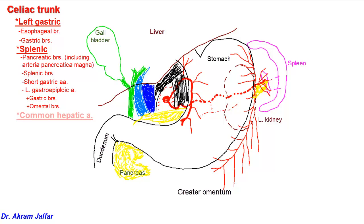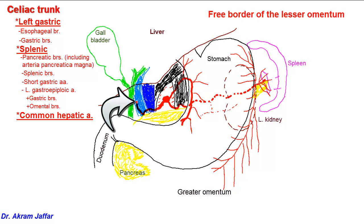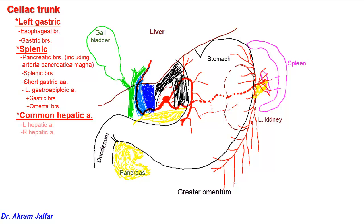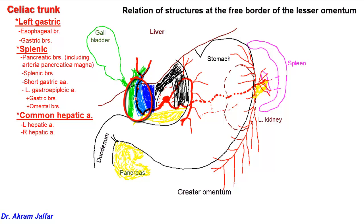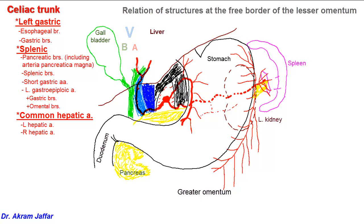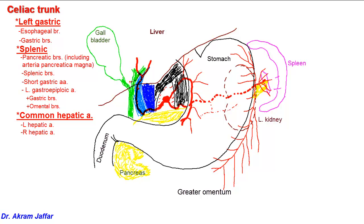The third branch from the celiac trunk is the common hepatic artery. The common hepatic artery passes toward the right along the upper border of the pancreas, and then passes a little anteriorly to gain access to the lesser omentum and will ascend up toward the liver, toward the porta hepatis, along the free border of the lesser omentum. It will divide into a right and left branch. The bile duct is located on the right side; the hepatic artery is on the left side. Both are located in front of the portal vein, and the three structures — the triad — are located in the free border of the lesser omentum. The right hepatic artery has a small but important branch that passes behind the hepatic duct and supplies the gallbladder — this is the cystic artery.